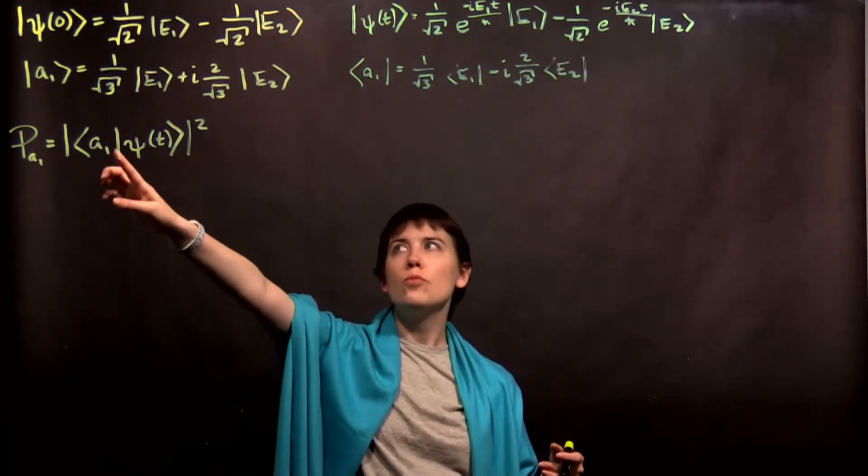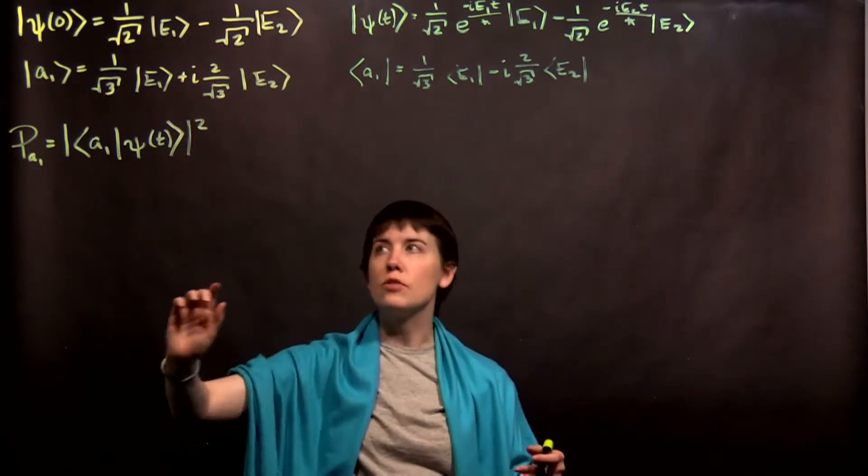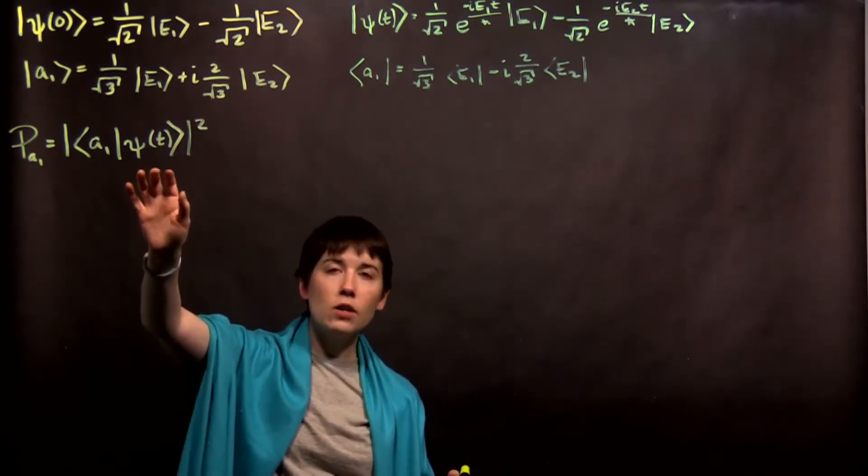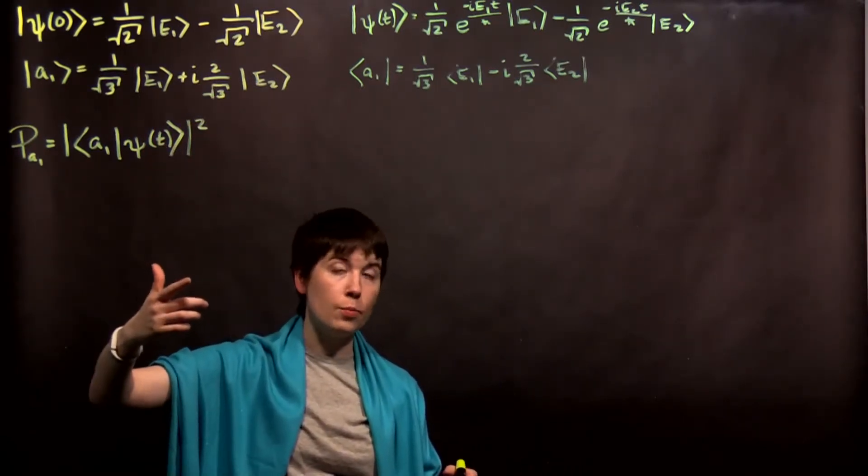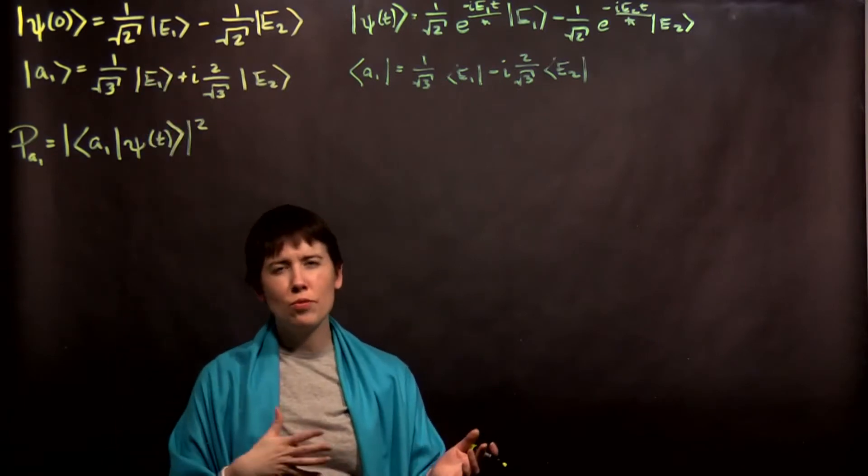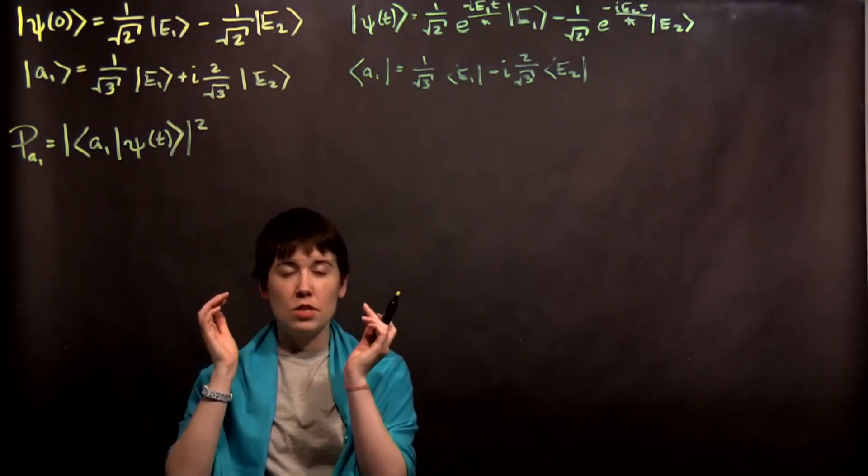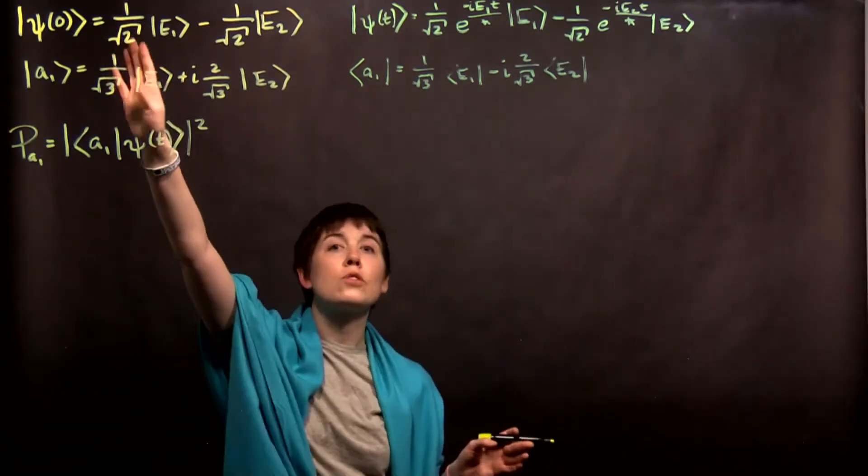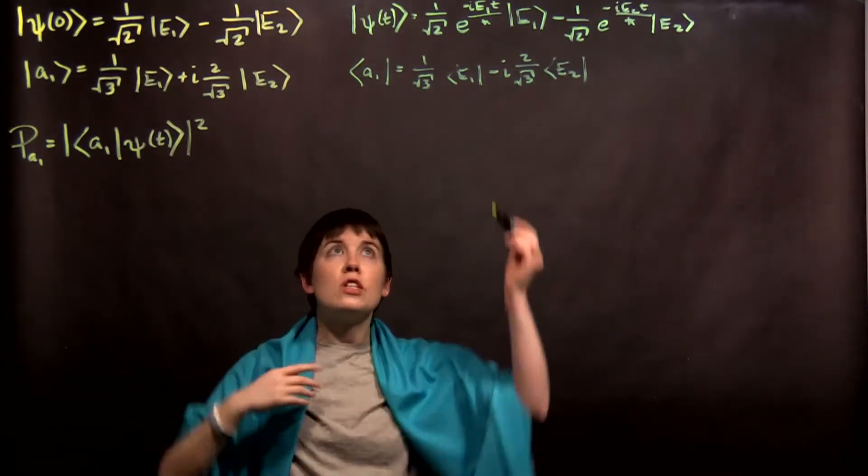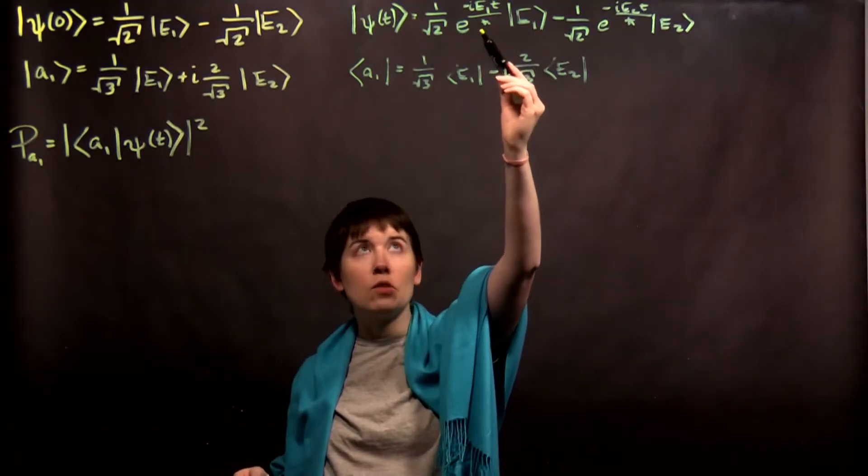And then, we need to remember to take that i and complex conjugate it. For psi, what we actually need to do here is introduce that time dependence. And so, if you think back to our general energy states, we always had the cn of time equals zero. Well, that's literally one over square root of two. And then, we just introduce this time dependence term.